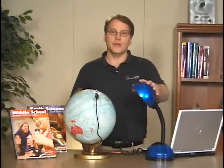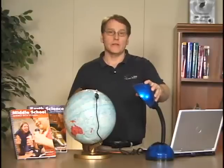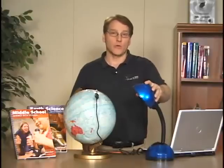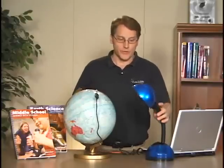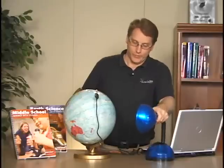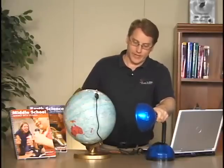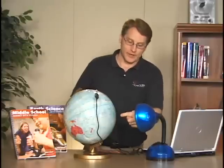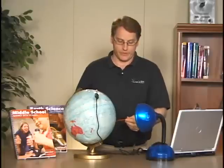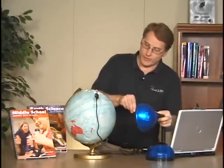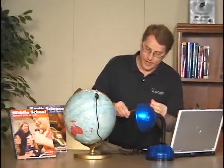Next, I need to position the lamp to model where the sun would be in winter in the northern hemisphere. To do that, I bring this down so it's aimed directly at the Tropic of Capricorn, because that's where it would be on December 21st. I'm going to aim it there, and we have a length of string.